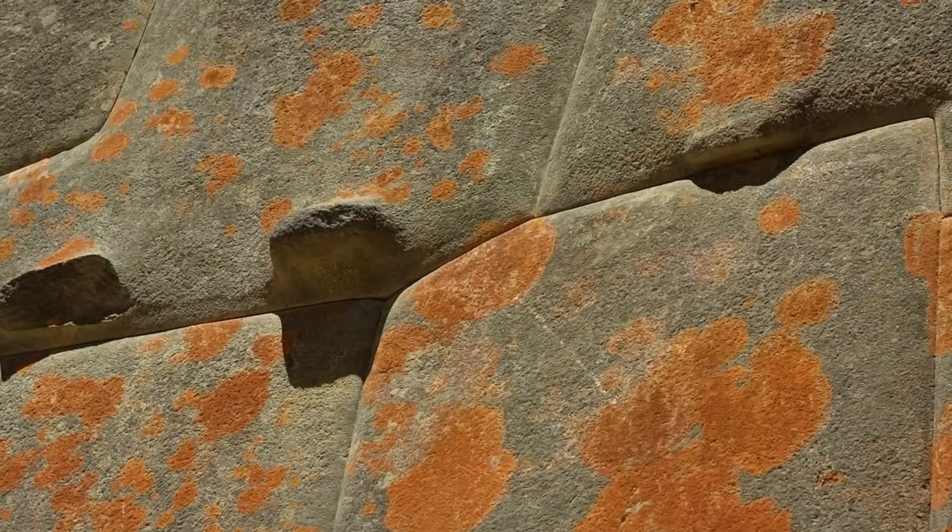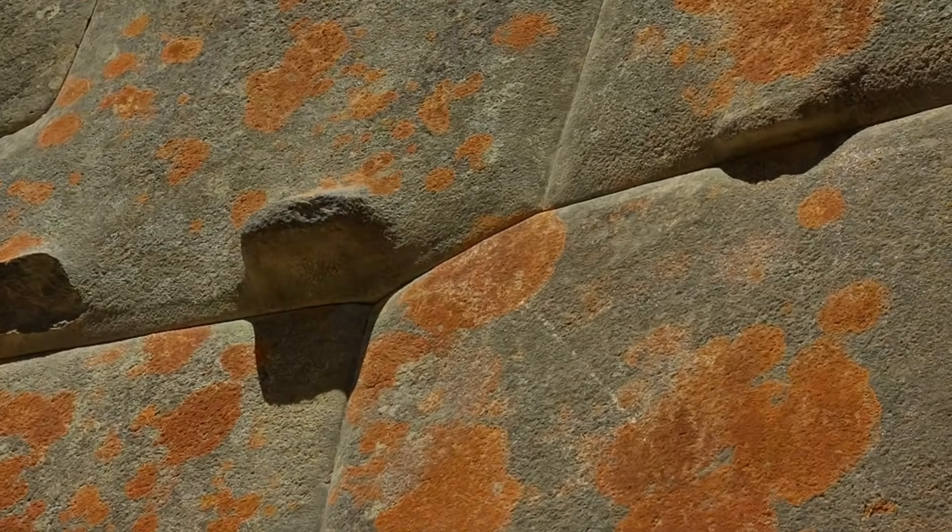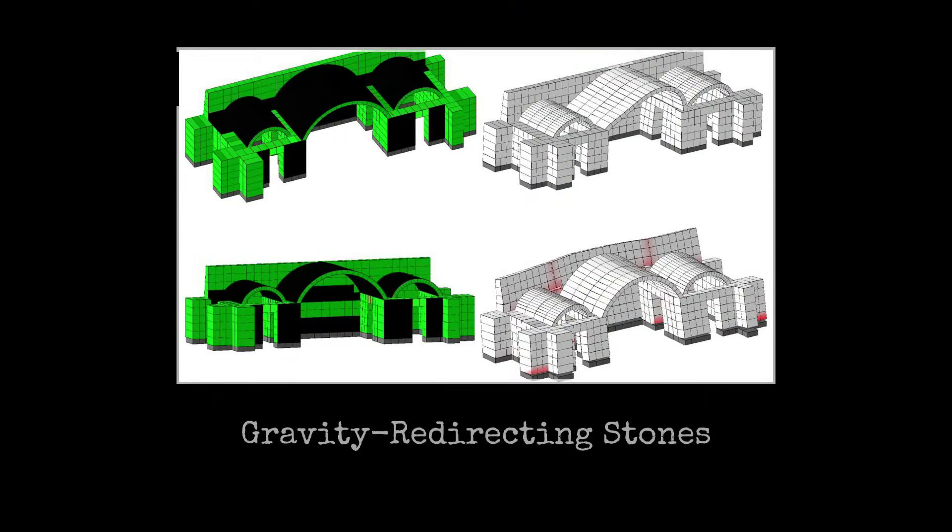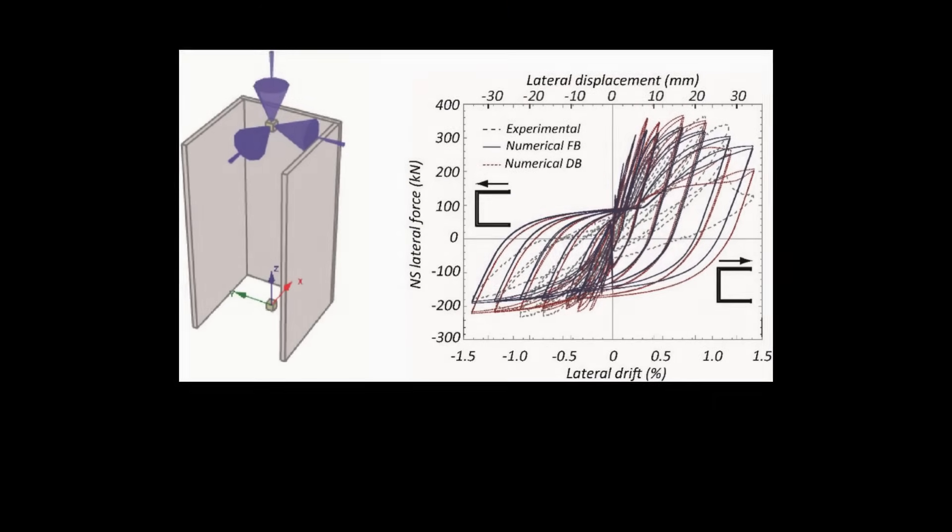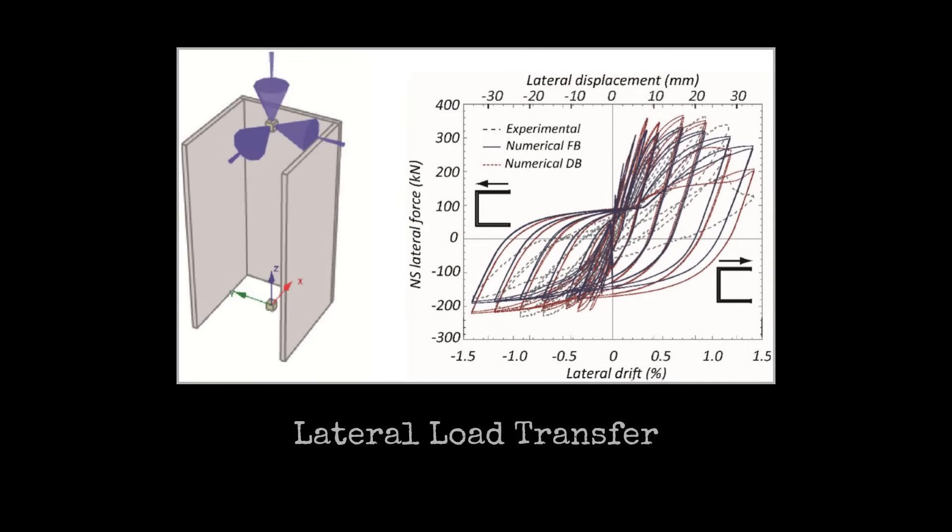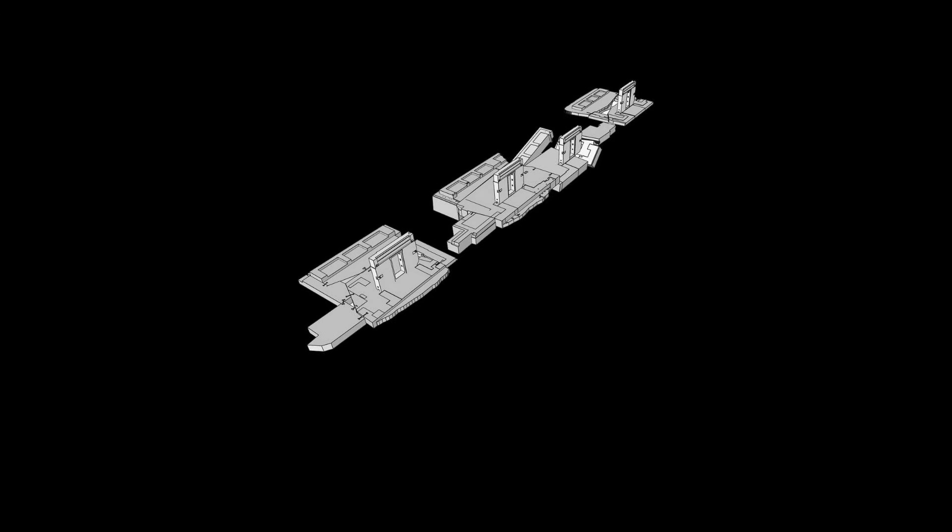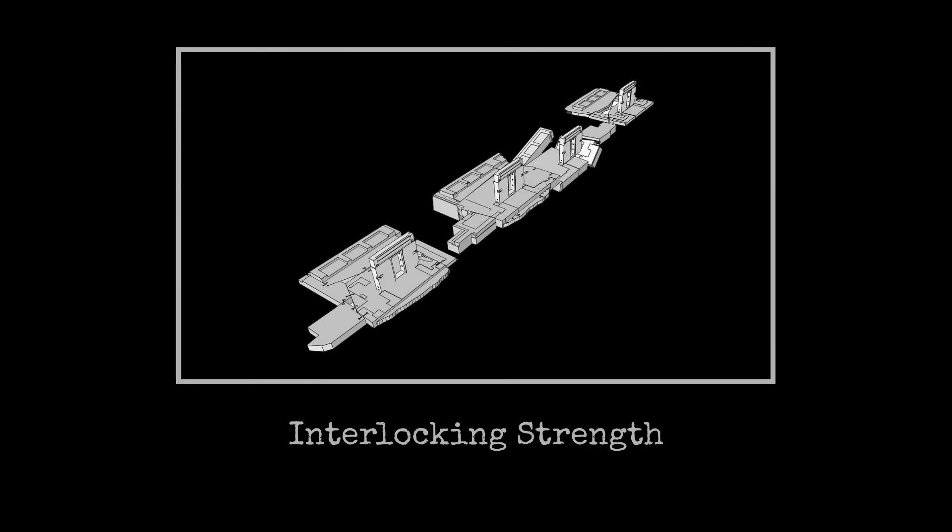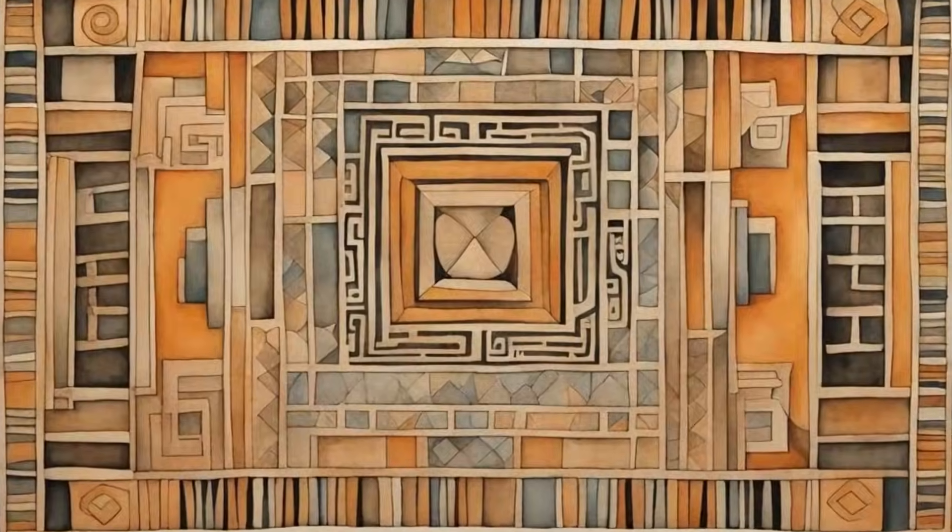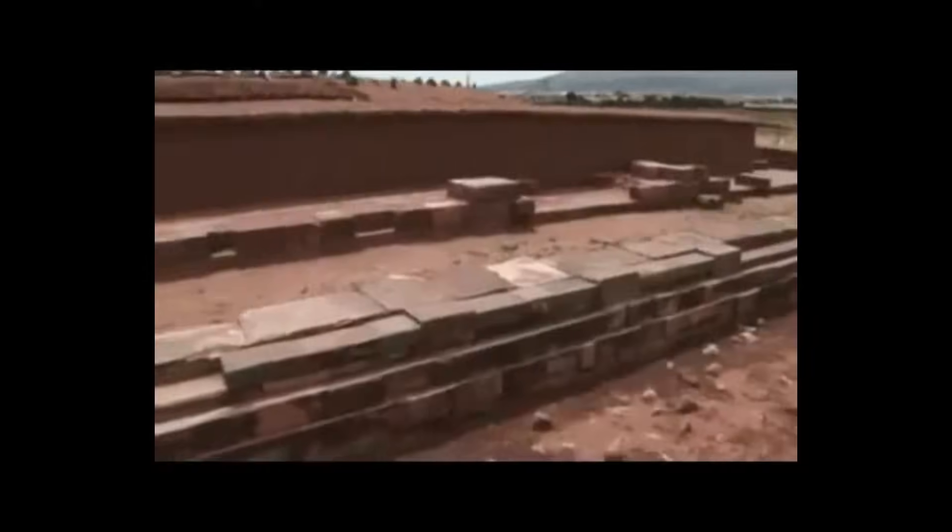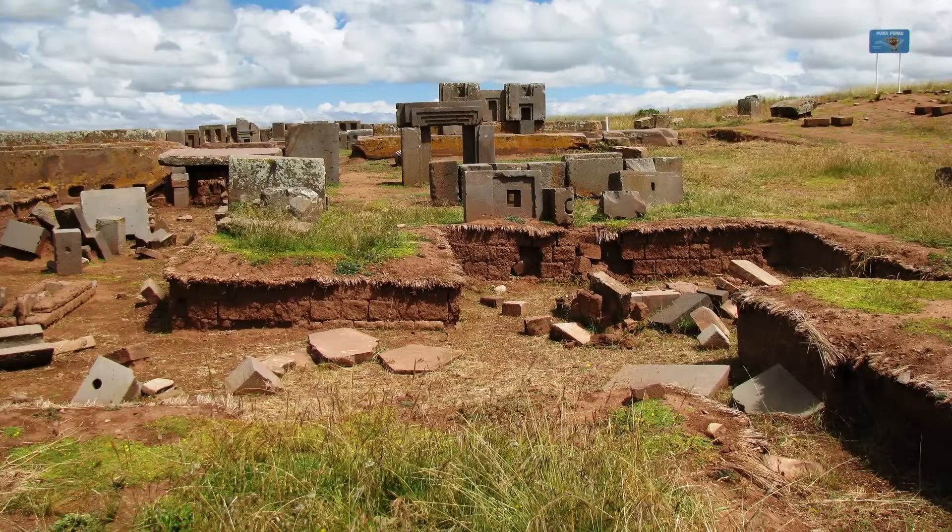Load distribution is a recurring theme at Puma Punku. The weight of each block is transferred not just downward, but also sideways, through a network of interlocking forms. This spreads the force across multiple contact points, lessening the strain on any single joint. The result is a platform that has remained largely intact despite centuries of earthquakes, flooding, and human disturbance.